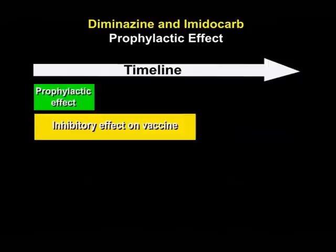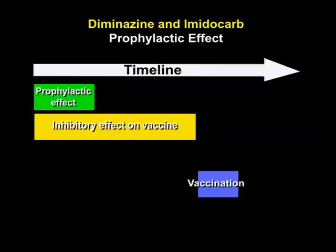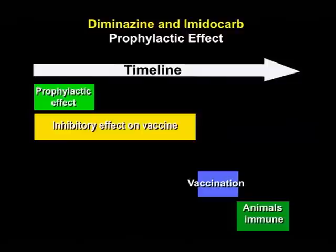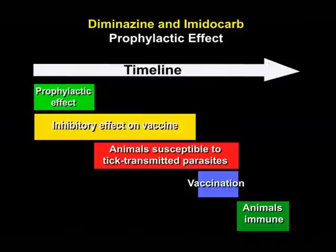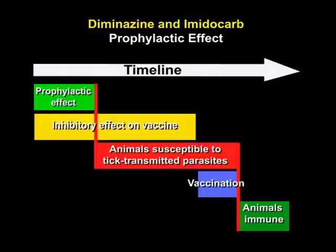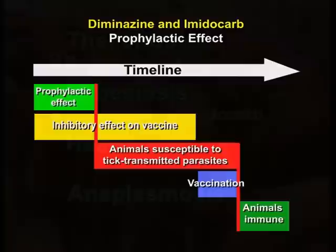Particular attention should be paid to the considerably longer inhibitory effect these drugs have on parasite strains used in the vaccines. Should vaccination be considered as a long-term control option, cognizance should also be taken of the fact that immunity following vaccination may take several weeks to develop. Most importantly, it should be realized that for a significant period of time, animals will be fully susceptible to tick-transmitted parasites. This coincides with the period after the prophylactic effect of the drugs has waned, until immunity develops after vaccination. During this period, animals should be kept tick-free as far as is practically possible, to prevent disease outbreaks due to tick-transmitted parasites.